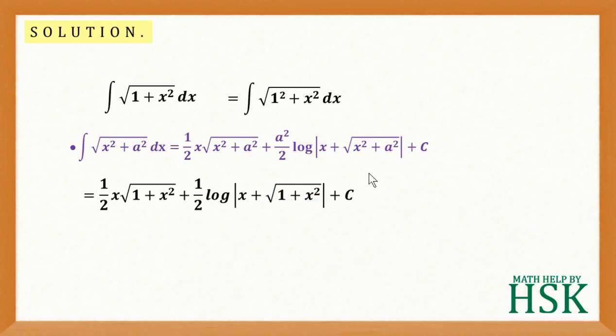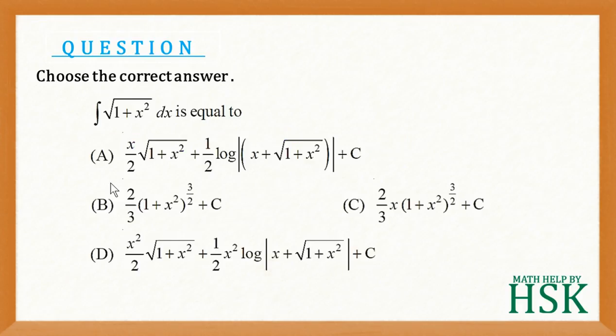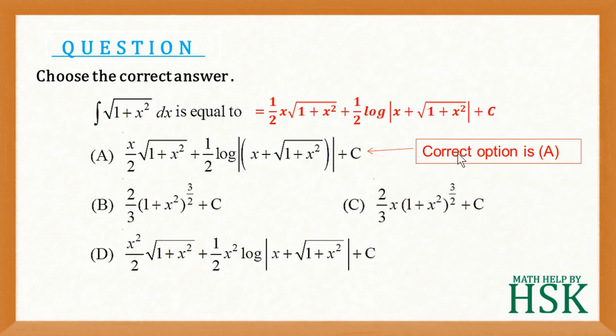So there is the value of integration of this function. So I've calculated that square root of 1 plus x square dx is equal to 1 by 2 x times square root of 1 plus x square and so on. Therefore, my correct option is A.